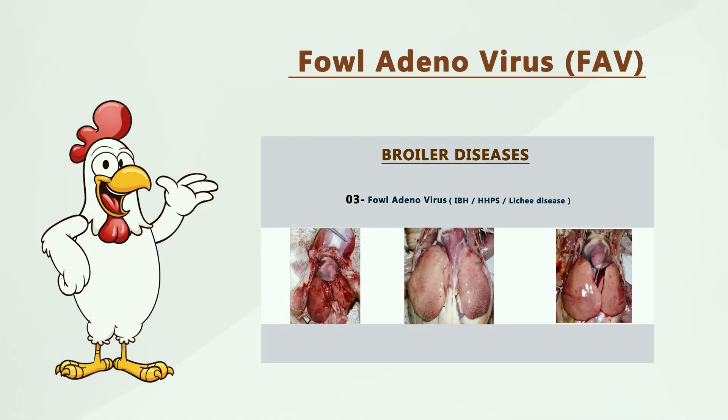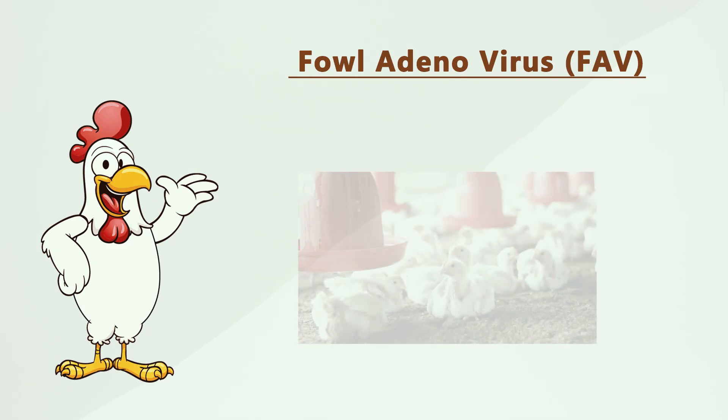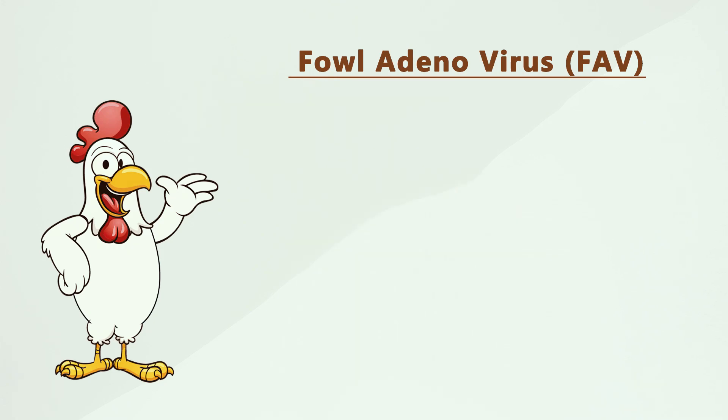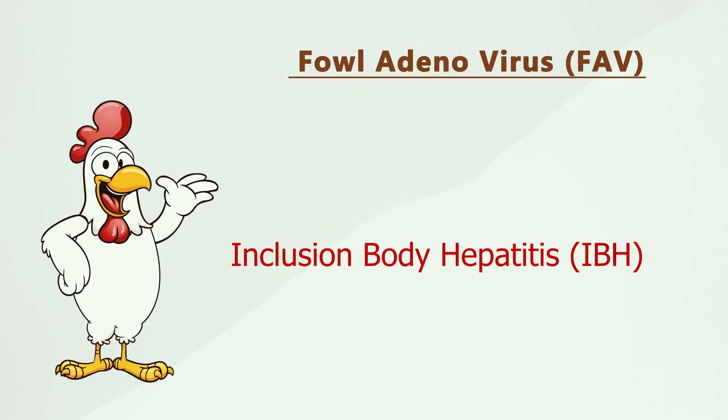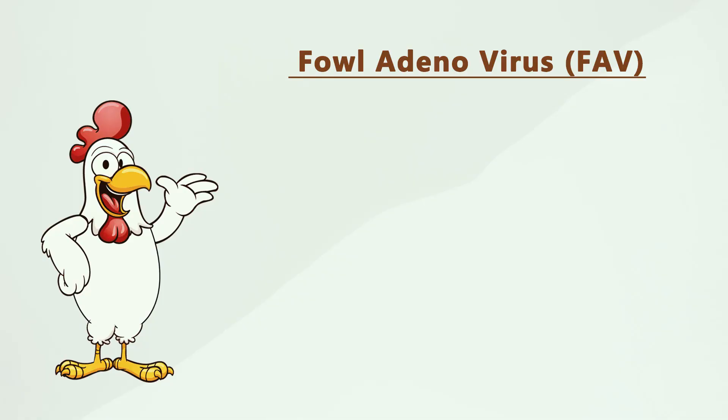In previous videos we covered Ranigate disease and Gumroad disease. These are important diseases in broilers caused by foul adenoviruses. Foul adenovirus causes inclusion body hepatitis in broilers, also known as hepatitis hydropericardium syndrome.